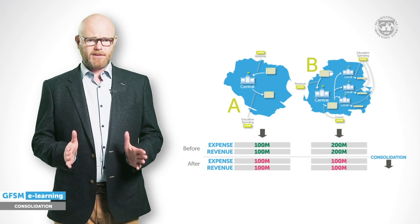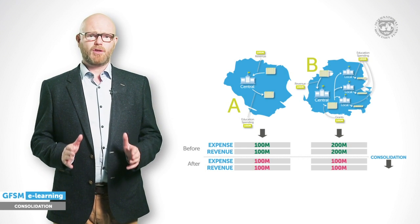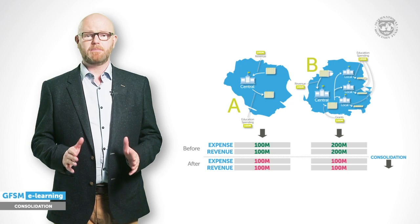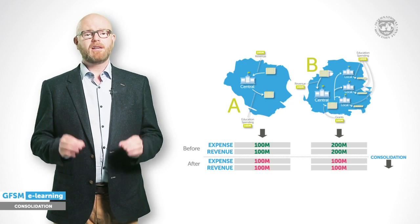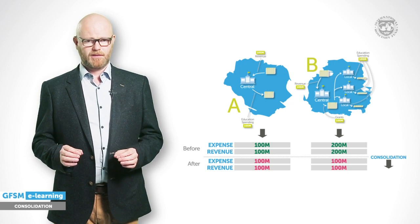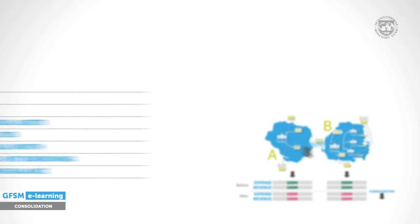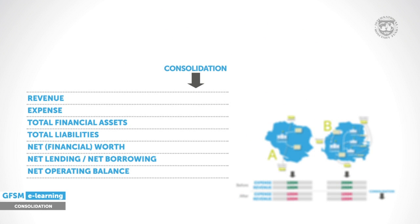An important matter to note is that neither the net operating balance nor the government deficit are affected, because both revenue and expense are adjusted symmetrically by consolidation. This symmetrical reduction leads to a general rule: gross presentation of aggregates such as total revenue, total expense, and the total value of financial assets and liabilities are reduced in a systematic manner through consolidation and thus present a less inflated picture. However, the balancing items such as net financial worth — financial assets minus liabilities — are not affected.